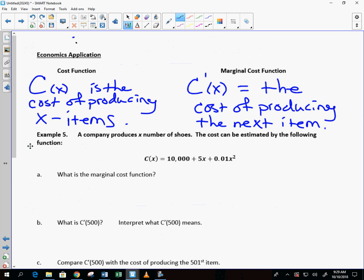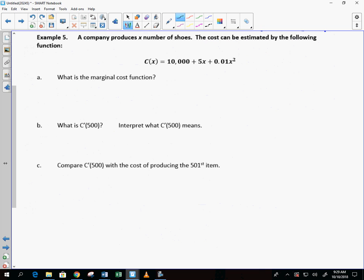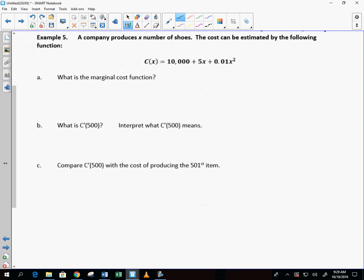It says, you don't want to do that. That's tomorrow. A company produces x number of shoes. The cost can be estimated by the following function: C(x) = 10,000 + 5x + 0.01x². What is the marginal cost function? The marginal cost function is simply C'(x). This is super easy. What's C'(x)? 5 + 0.02x. Piece of cake. Upside down. Upside down. Right? Okay.